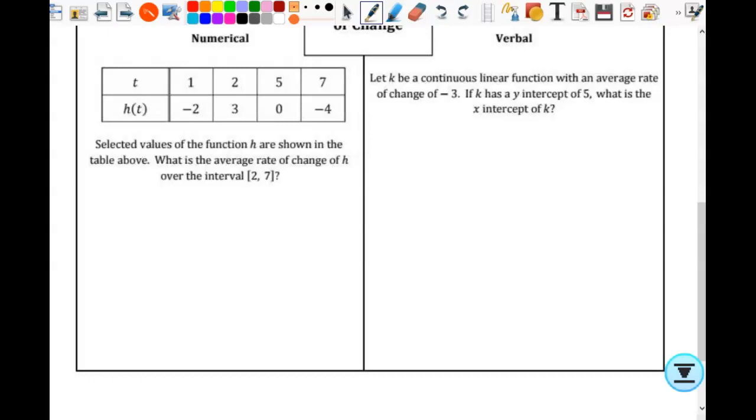We have this table here. It says selected values of function h are shown in the table above. You want to make sure you pay attention - it says function of h and h(t). That's a function of h, right? So we know these are function values and not rate of change values or something else. Pay attention to what it's telling you and what the table is so that you're using the numbers in the correct manner.